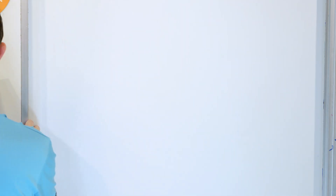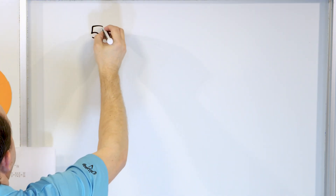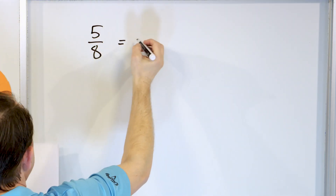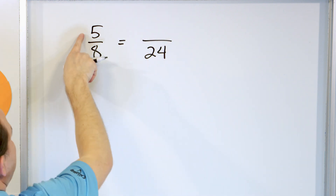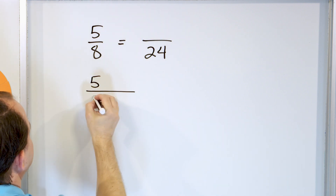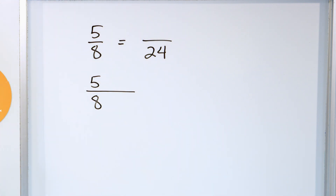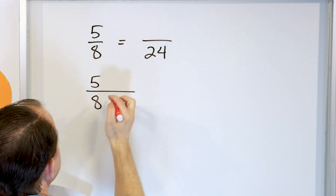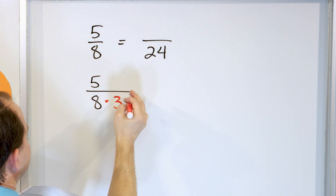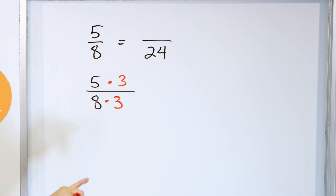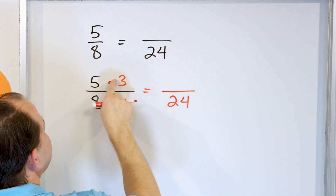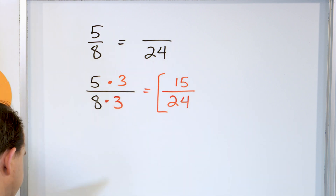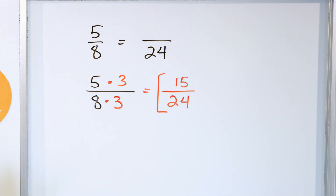Let's take a look at the problem: 5/8, and we're going to set that equal to a new fraction with 24 on the bottom. We have this fraction — we can multiply it by anything we want. What do we want to multiply by? We know we want 24 on the bottom, so we have to multiply by 3 on the bottom, and therefore we must multiply by 3 on the top to keep it balanced. On the bottom, 8 times 3 is 24. On the top, 5 times 3 is 15. So the answer is 15/24.